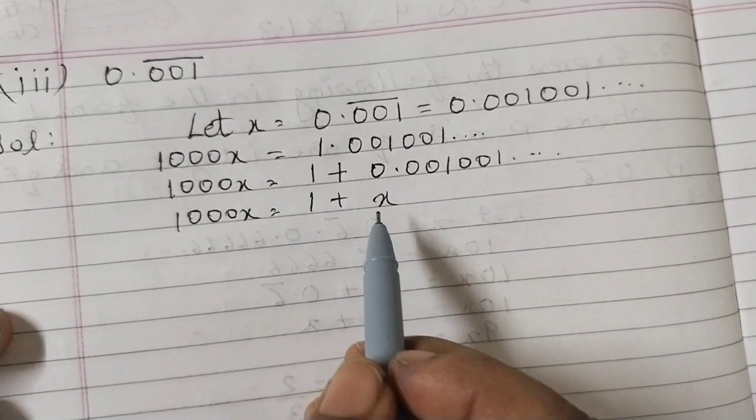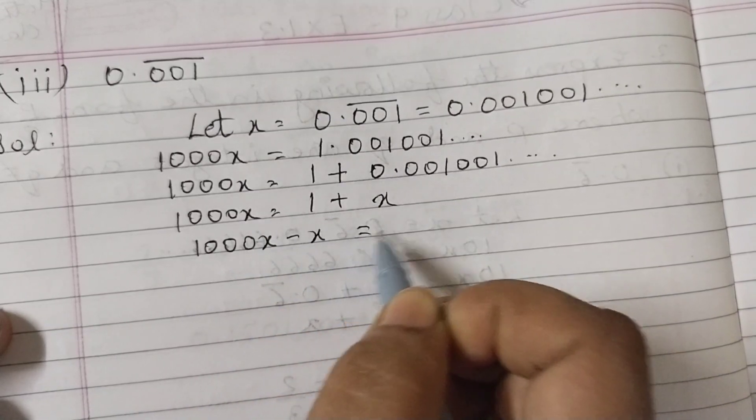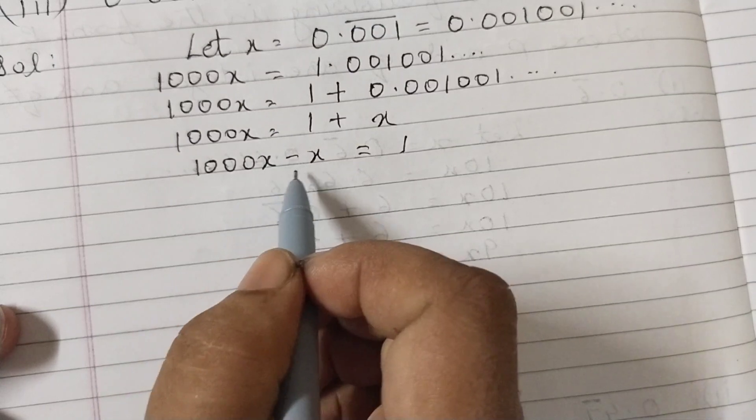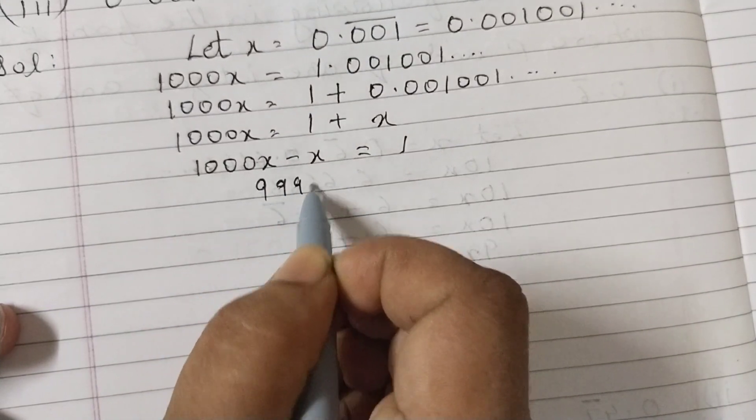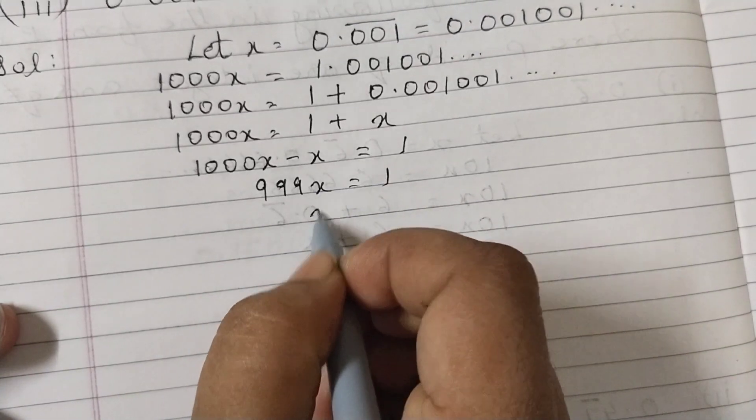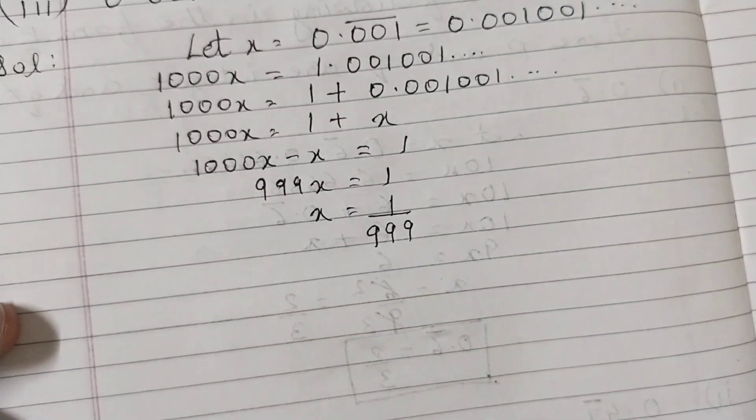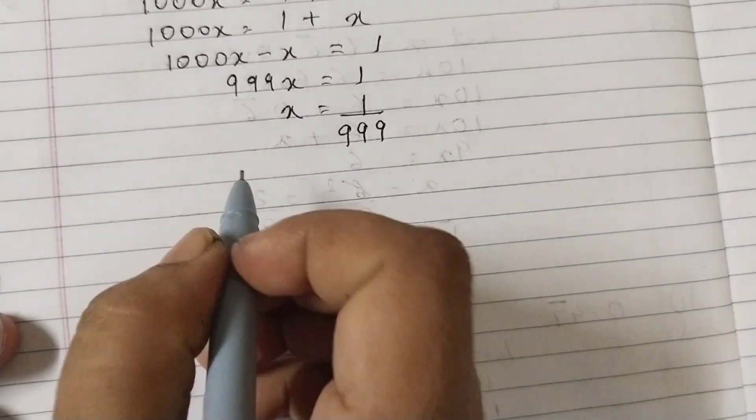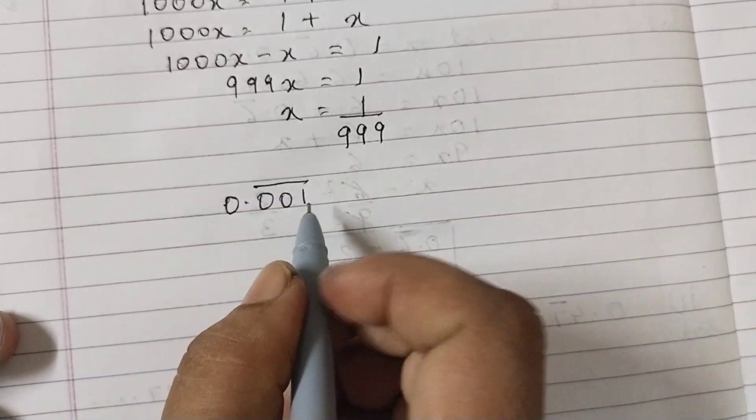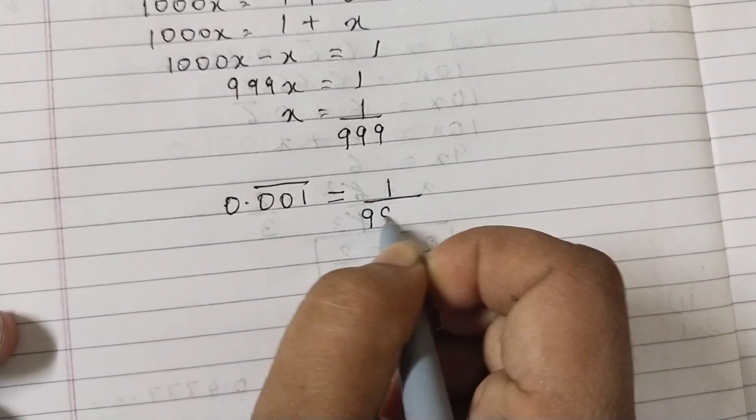1000x minus x is equal to 1. This is 1000 minus 1, which is 999x equals 1. Divide both sides by 999. And this would be 1 by 999. So 0.001̄ on top of 001 equals 1 by 999.